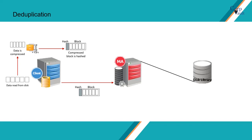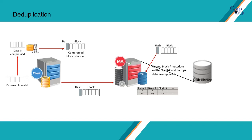The block and hash are sent to the media agent. The block is compared in the deduplication database. The deduplication database, or deduplication store, serves as the repository for signatures associated with all blocks that are backed up, and reference counts to copies of the blocks backed up using the storage policy copy. The signature generation module computes the hashed signature for the block and compares it with existing signatures in the deduplication store to determine whether it is identical. If the signature is unique, the data is stored on the backend storage and an entry is added to the deduplication database for subsequent comparisons. On the disk library for the backup job, block data, index data, and metadata are stored.